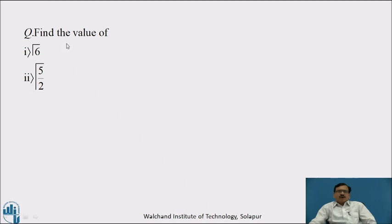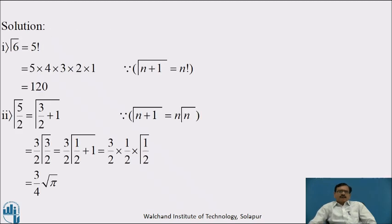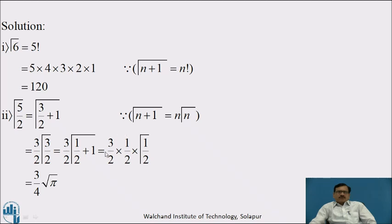Pause the video and find the value of Γ(6) and Γ(5/2). Γ(6) = 5! = 5 × 4 × 3 × 2 × 1 = 120, since Γ(n+1) = n!. For Γ(5/2): Γ(5/2) = Γ(3/2 + 1) = (3/2) · Γ(3/2). Now Γ(3/2) = Γ(1/2 + 1) = (1/2) · Γ(1/2). Therefore Γ(5/2) = (3/2) · (1/2) · Γ(1/2) = (3/4) · √π.